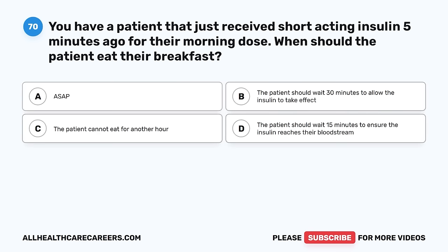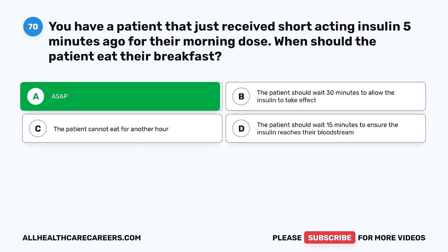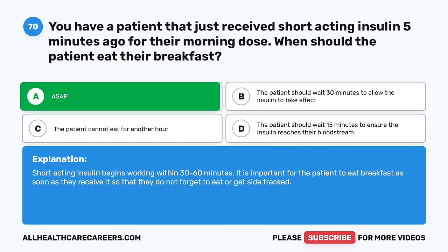Question 70. You have a patient that just received short-acting insulin five minutes ago for their morning dose. When should the patient eat their breakfast? A. ASAP. B. The patient should wait 30 minutes to allow the insulin to take effect. C. The patient cannot eat for another hour. D. The patient should wait 15 minutes to ensure the insulin reaches their bloodstream. The correct answer is A, ASAP. Short-acting insulin begins working within 30 to 60 minutes. It is important for the patient to eat breakfast as soon as they receive it so that they do not forget to eat or get sidetracked.